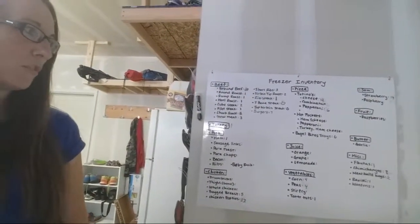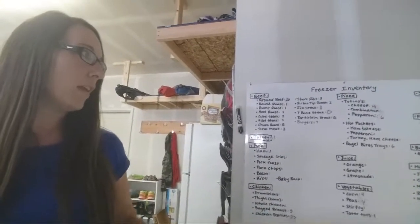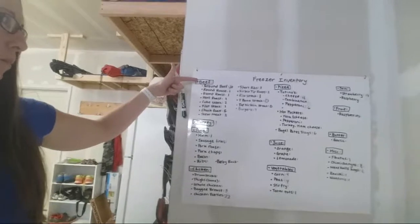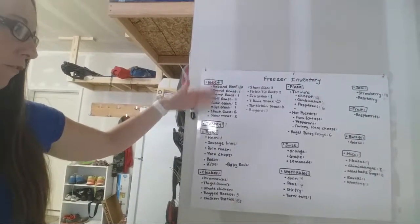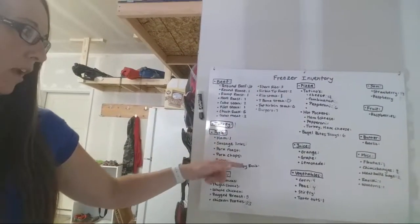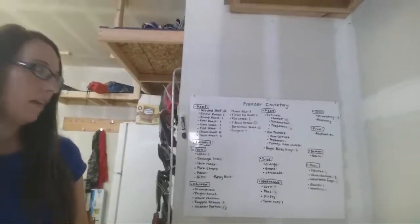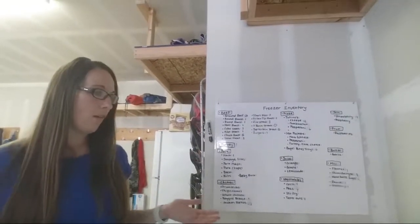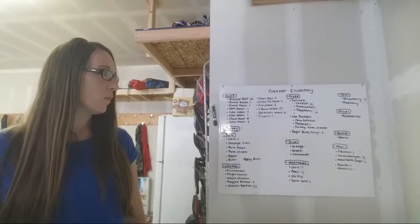And then I put subcategories. So in my beef I've got ground beef, round roast, just all my different beefs. Or in pork I have it by ham or sausage links, bacon, things like that, so that I can know what I have in my freezer.